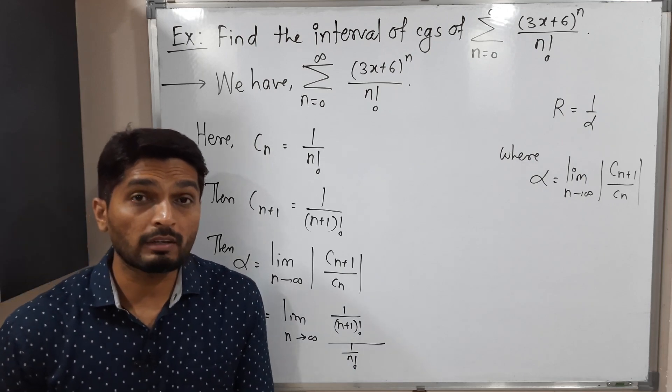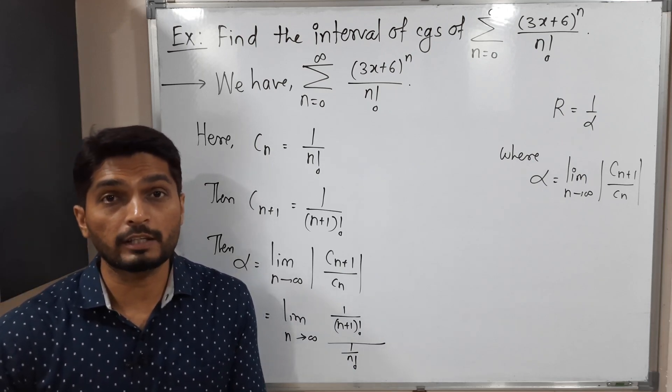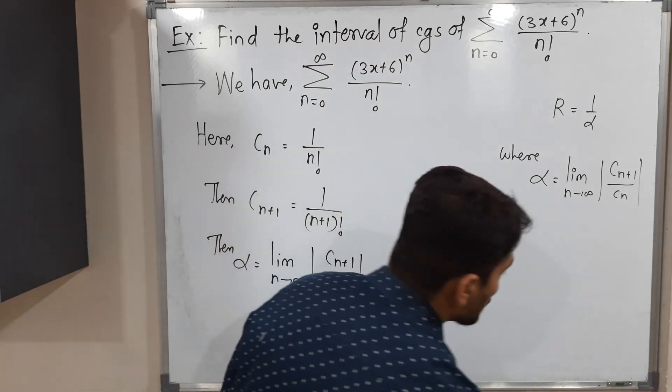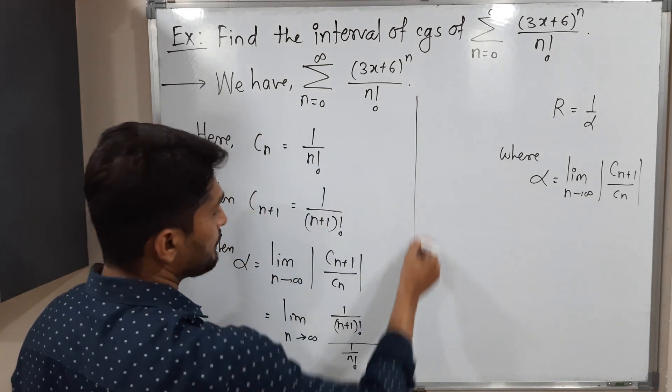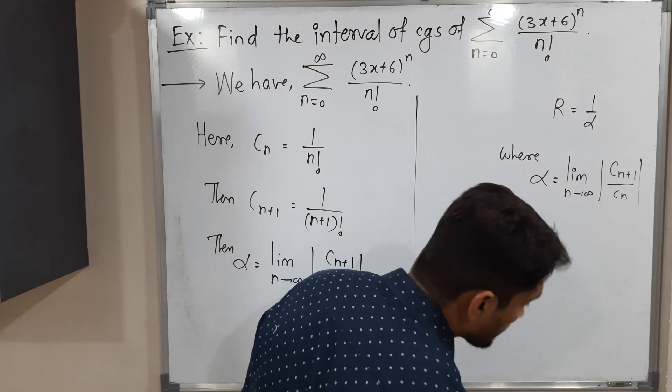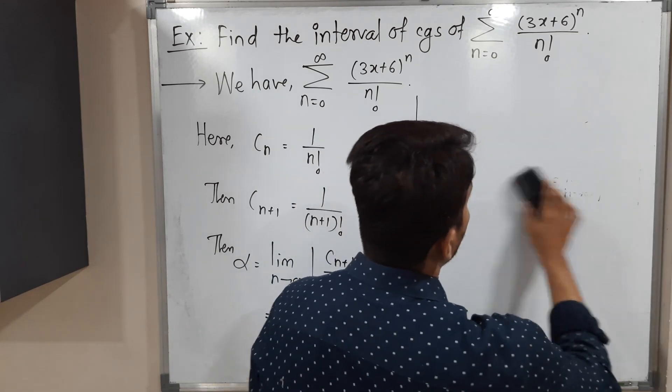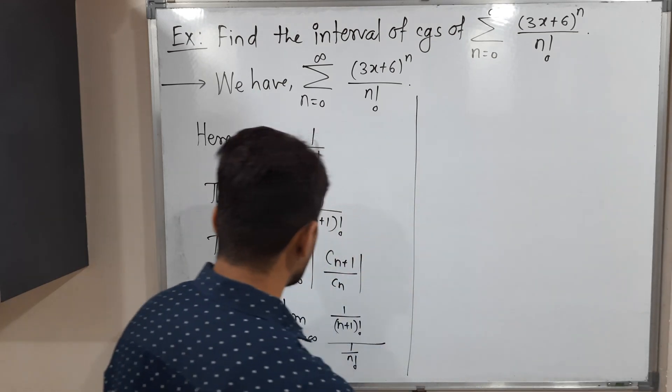See, there is no need to apply mod since we are having factorials, so obviously it will give positive values, right? So we have some space. Let us remove this part, it is not required now. So let us continue it here. So this is equal to...